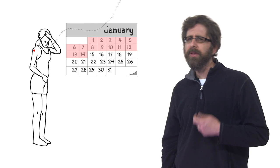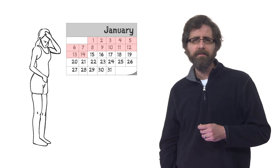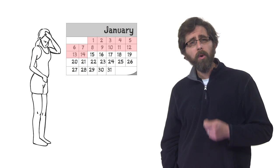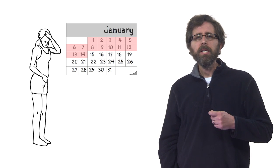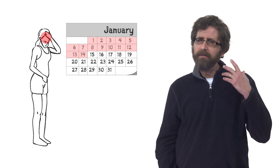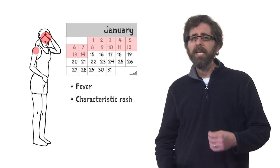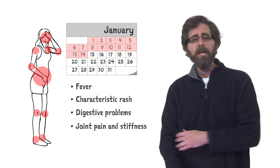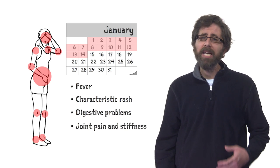People usually become sick within a week or two after being bitten by an infected mosquito. Over three-quarters of infected people will usually develop symptoms, which appear suddenly and include fever, a characteristic rash, digestive problems, and joint pain. The joint pain and stiffness can potentially last for months to years.